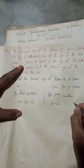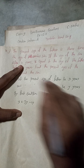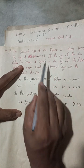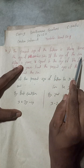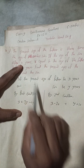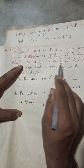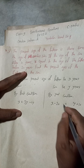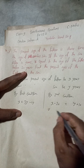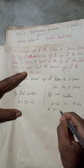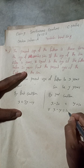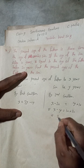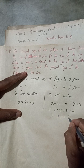The son's present age is y, and after 10 years it will be y plus 10. If the age of the son after 10 years is equal to the age of the father before 20 years, then y + 10 = x − 20. This implies x − y = 30. This is equation 2.